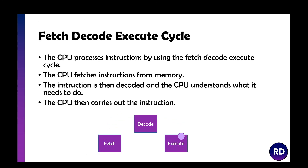The CPU carries out instructions using the fetch, decode, execute cycle — or FDE cycle. The CPU fetches an instruction from memory, it is then decoded so the CPU understands what it needs to do, and then the CPU carries out the instruction. So when we talk about a million cycles per second in a megahertz, we mean a million fetch, decode, execute cycles.